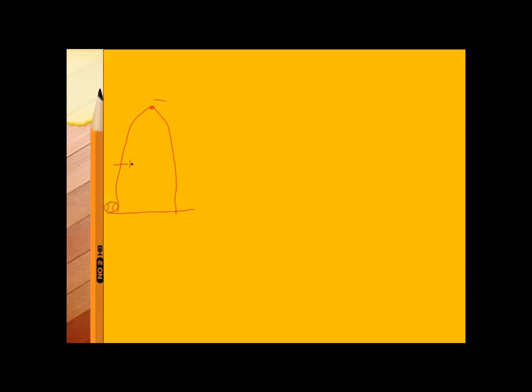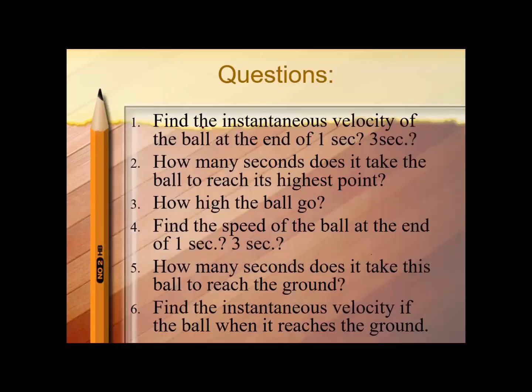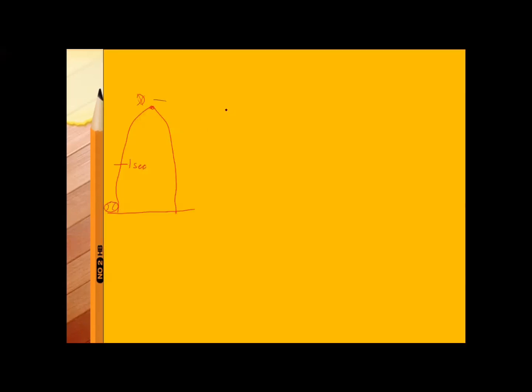Let's draw first. Here is the ball — if you throw it upward, it eventually goes down. We have the highest point here. We are looking at the end of one second, and this is the highest point. Now from the given equation s = −16t² + 64t, the instantaneous velocity is the derivative of s with respect to time, which gives us v = −32t + 64.